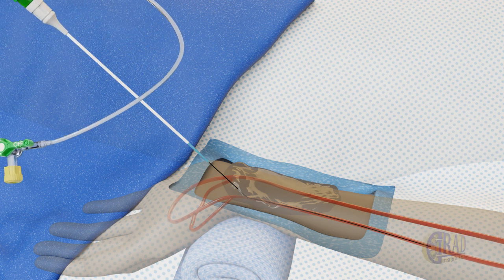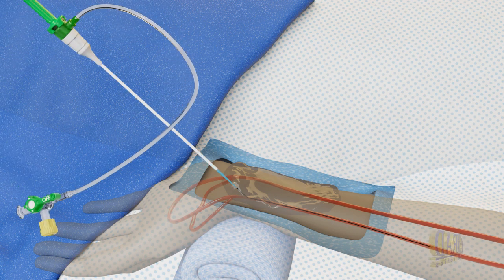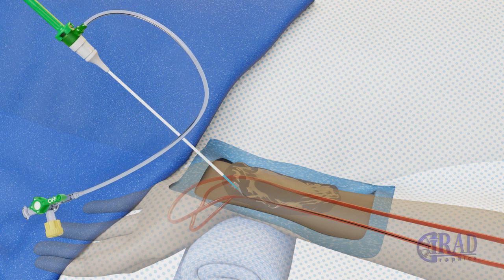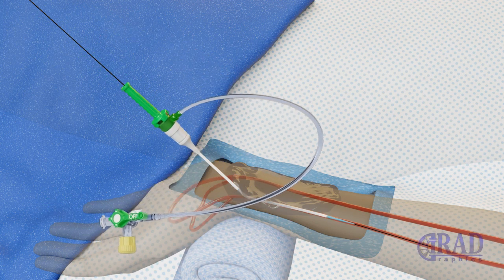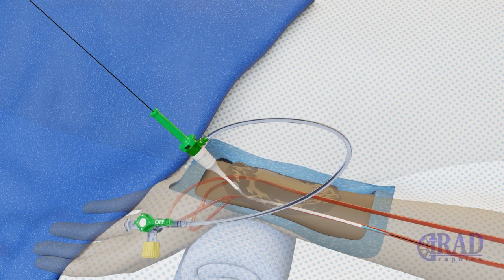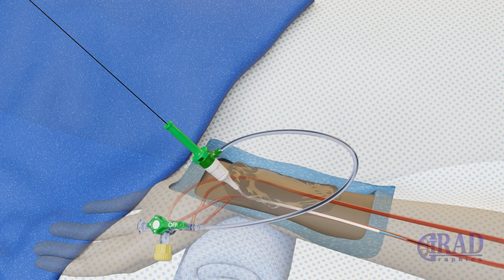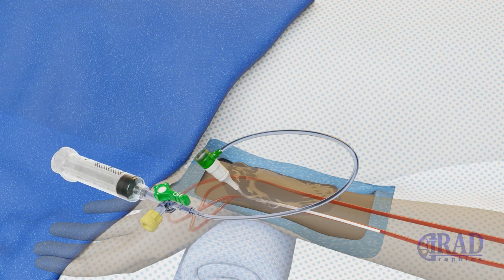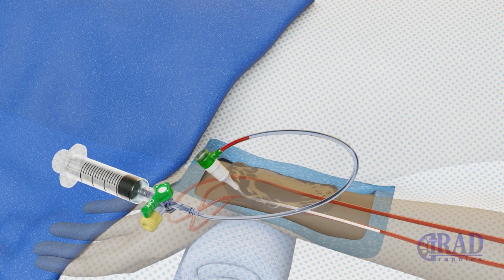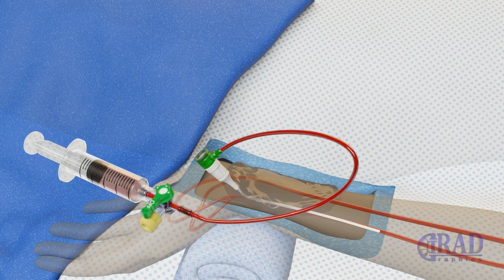Once the slim sheath is properly placed, the wire and inner dilator are removed. Subsequently, a mixture of vasodilators is injected through the sheath to avoid arterial spasm.